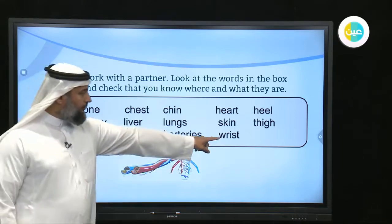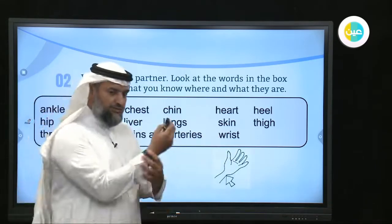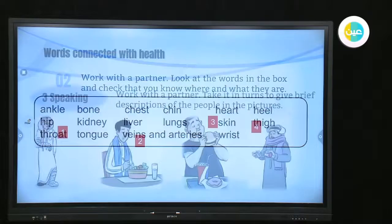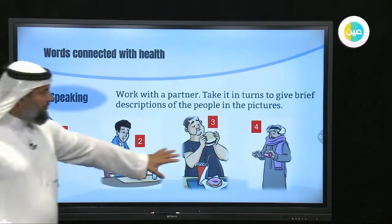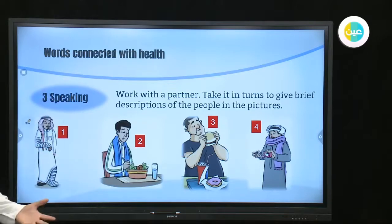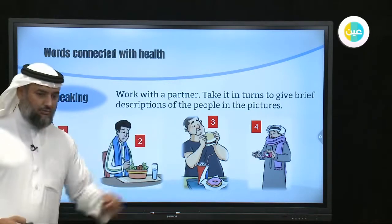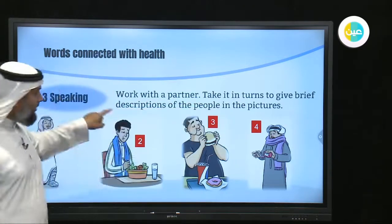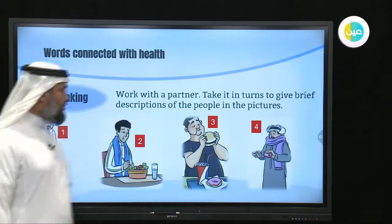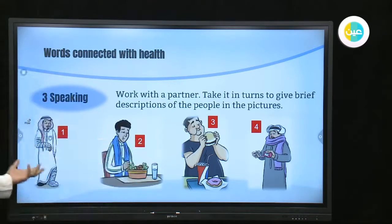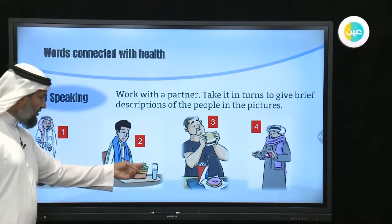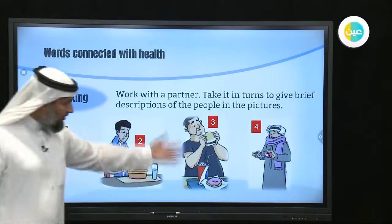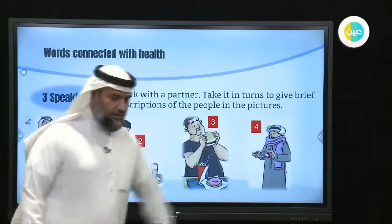Then 'throat', 'tongue', and 'veins and arteries'. And 'wrist' — that's this part here. Now look at these four pictures — what do you think is going on? Work with a partner and take turns giving a brief description. One person is injured, one is eating healthily with vegetables and water after working out, one is eating junk food, and one is sick and taking medicine.